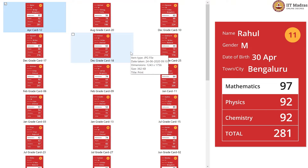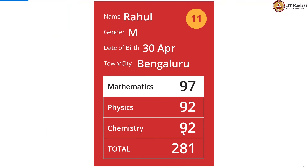So when you go card after card, you know you are in the same month until the month changes. A very relevant task here would then be to find out what is the maximum number of students born in a particular month — of all months, in one month, what is the maximum number of students born?